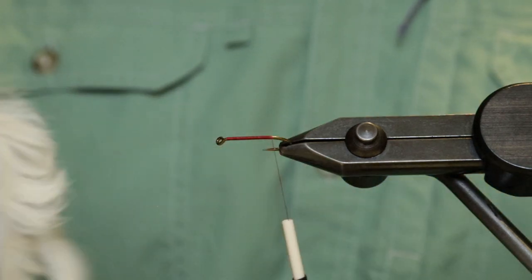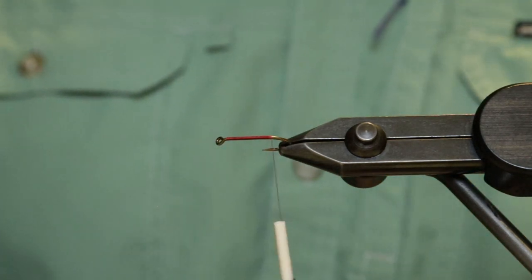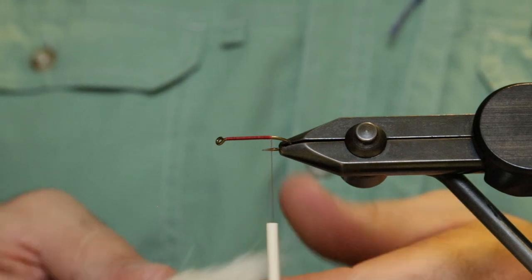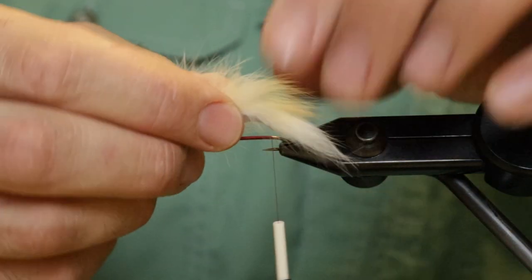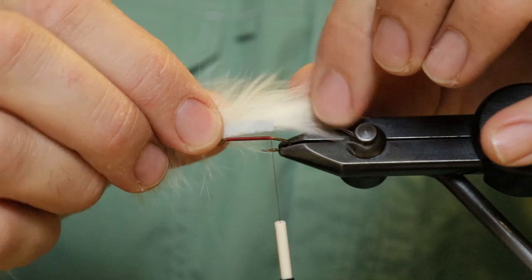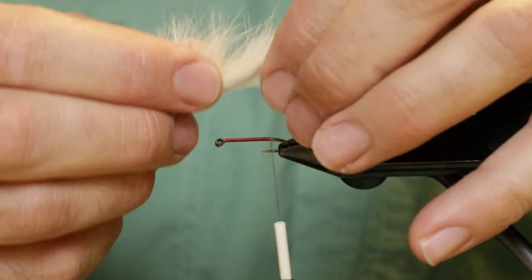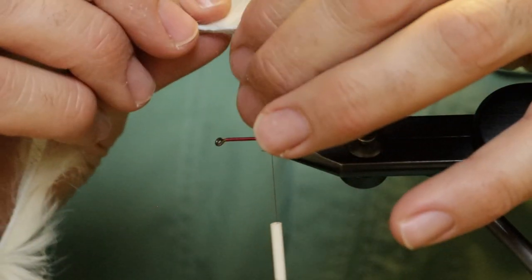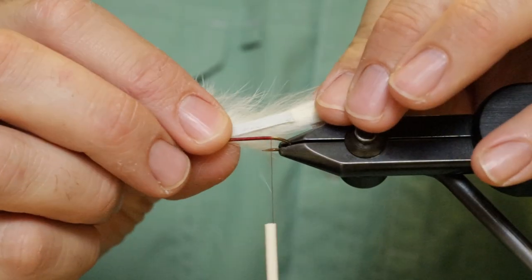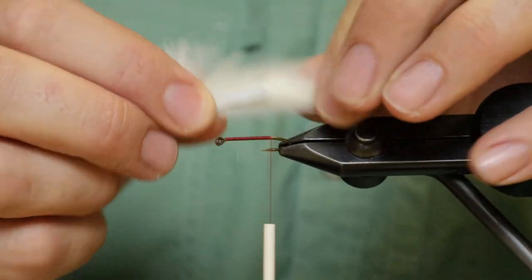So I grab a cream rabbit strip here. And for the tail, this is all one material. So for the tail, I'm just going to measure out about the length of this rabbit flesh here. It's going to be about the same length as this shank.